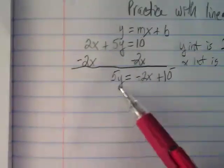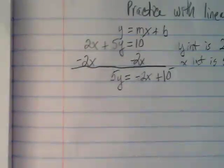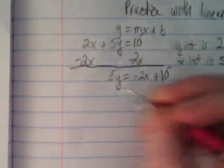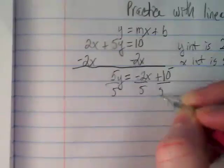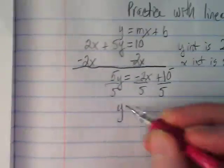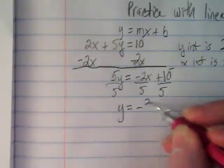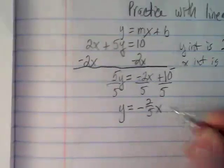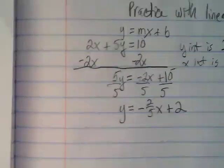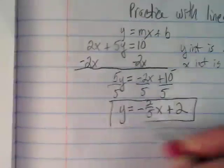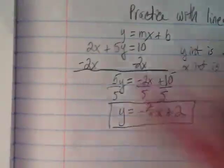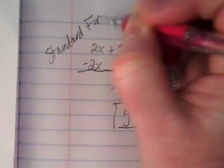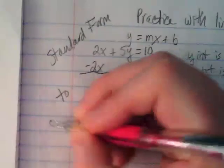This is not the slope though because the y is not by itself yet. So now we're going to divide by the 5. And every term here gets divided by it. And y is going to be equal to negative 2 over 5x plus 2. And that is in slope intercept form. So we went from standard form to slope intercept form.